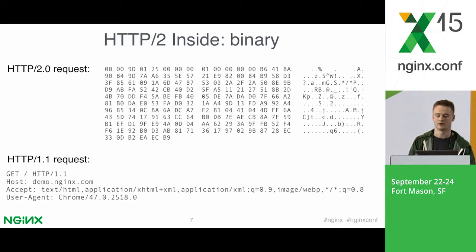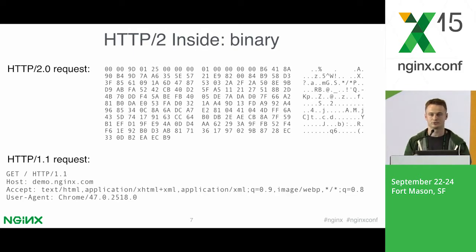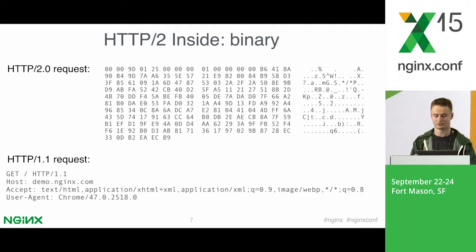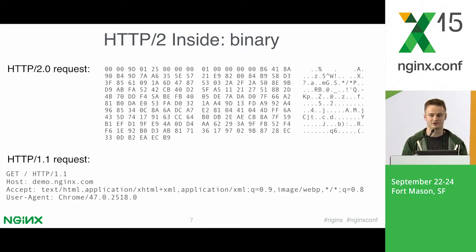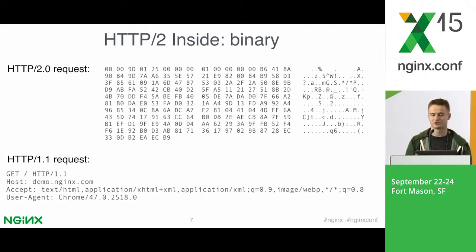You should use some tool, and sometimes you need to just read binary because a tool can be broken or cannot show you all the details in the bits. Fortunately, most of you can just turn on HTTP/2 in NGINX and never deal with its binary nature. And fortunately, most of the requests will be handled by machines, which are much better at reading binary protocols than humans.